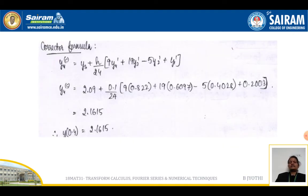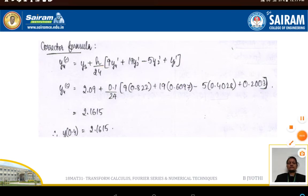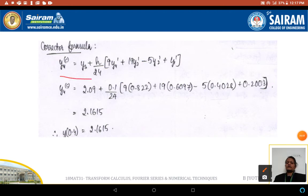Now let us use this in the corrector formula. The corrector formula is y₄(c) = y₃ + h/24[9y₄' + 19y₃' - 5y₂' + y₁']. Substituting all these values in the formula we get 2.1615.